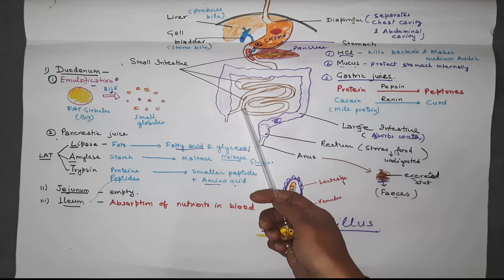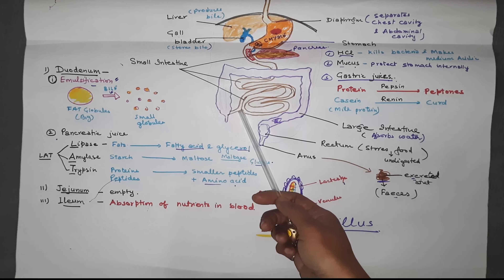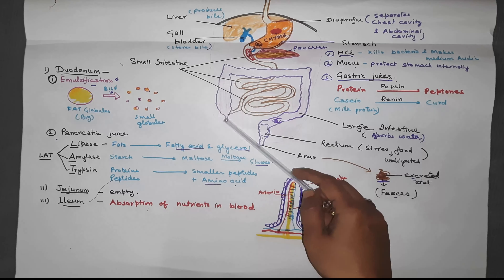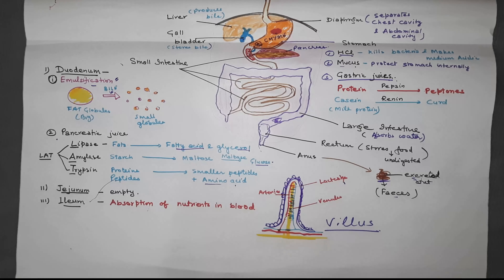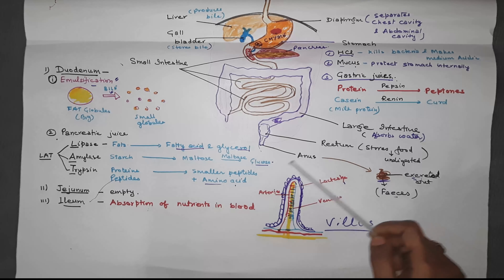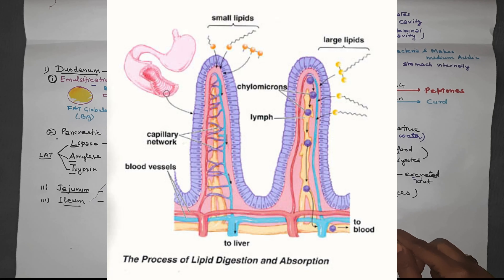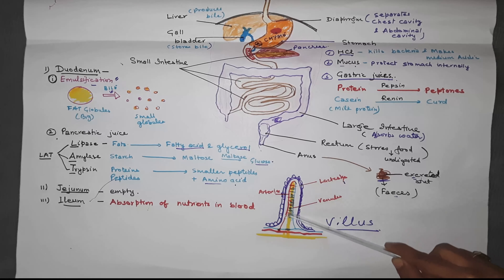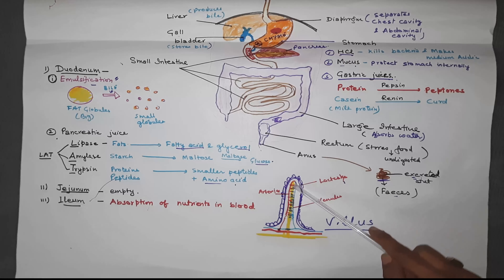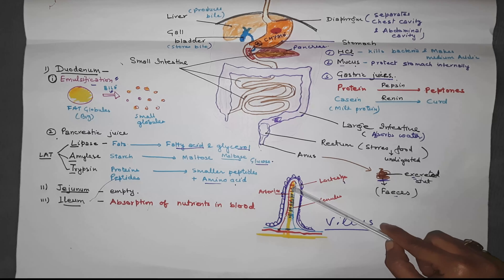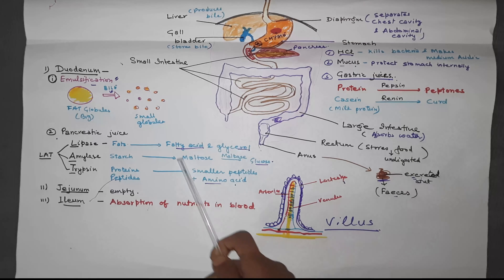The next part of the small intestine is the ileum, where intestinal juices are secreted and any remaining digestion is completed. The wall of the ileum performs absorption of nutrients into the blood. This absorption occurs through finger-like projections called villi (singular: villus) present inside the ileum. There is also a structure called the lymph vessel, known as lacteals, which absorb the digested fat molecules — that is, the fatty acid and glycerol.